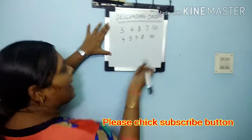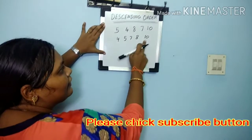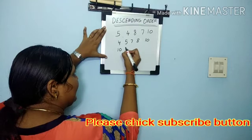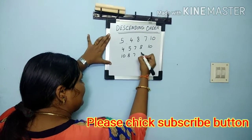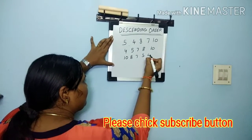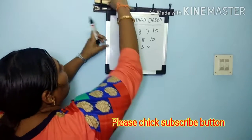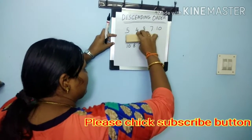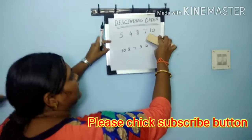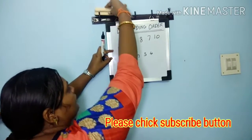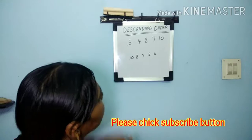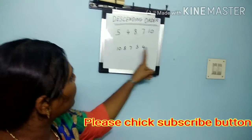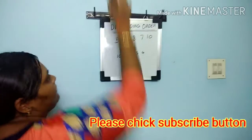Now ask the kids to write from the reverse: 10, 8, 7, 5, 4. Then ask them to erase the ascending order. That gives the descending order. It is big to small — this is called descending order.